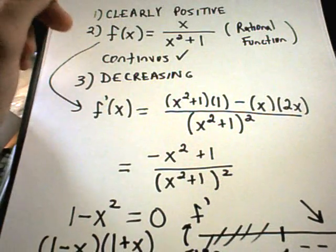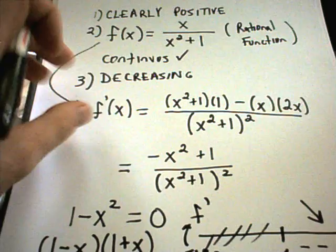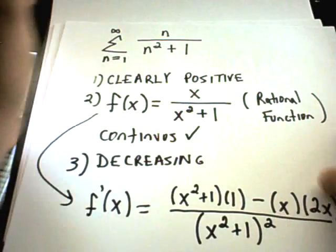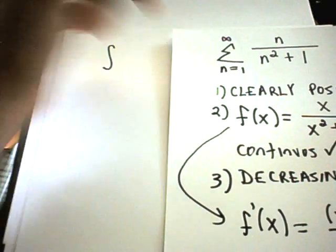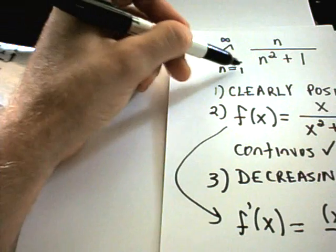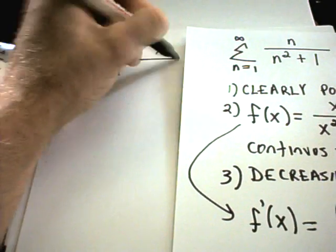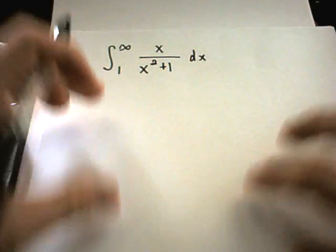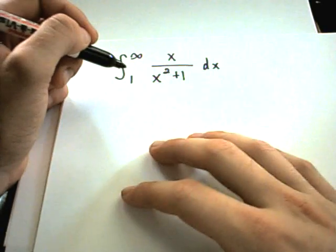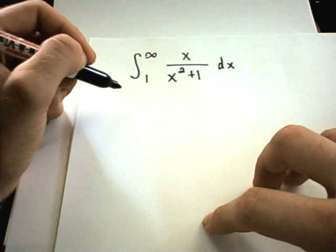So I've got a positive continuous decreasing function, which means now I can turn this thing into its equivalent improper integral. Since it started at 1 to infinity, the limits, I'm going to start the improper integral at the same place, 1 to infinity. If this was 5 to infinity, I would be doing 5 to infinity. Now you're back to good old improper integrals. If you've forgotten improper integrals, I do have another little video doing some examples, so it may help to take a look. You'll definitely want to be pretty familiar with them.